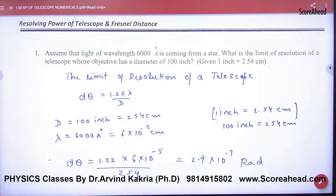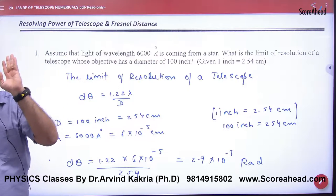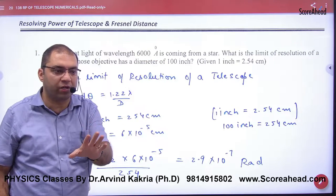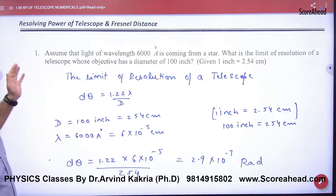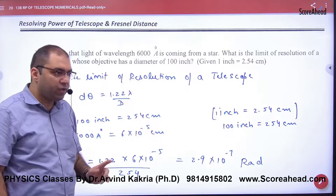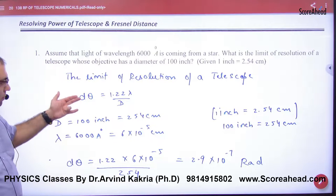The question is, assume that light of wavelength lambda is coming from a star. What is the limit of resolution? What is the limit of resolution of a telescope, which has a diameter of aperture given? Remember, what do we call the minimum angle of separation? Limit of resolution.